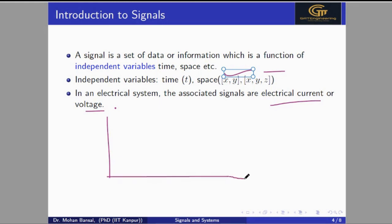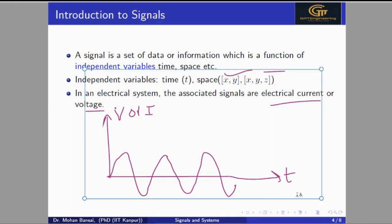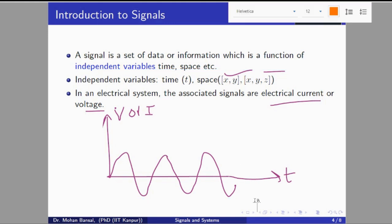If I draw a signal with respect to time, the horizontal axis is the time axis, which is the independent variable, and the vertical y-axis represents the amplitude — voltage or current. The signal shown is a sinusoidal signal. Here, t is the independent variable, while V or I (voltage or current) are the dependent variables.